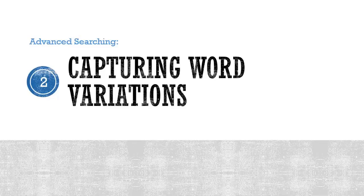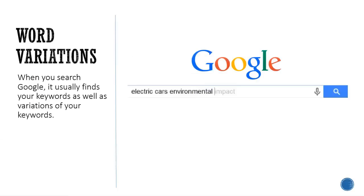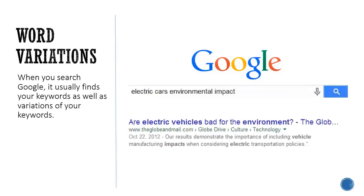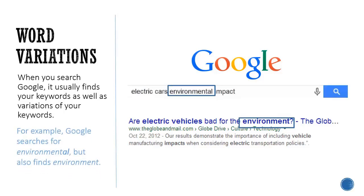Capturing Word Variations. When you search Google, it usually finds your keywords as well as variations of your keywords. For example, Google searches for the word environmental, but also finds environment.